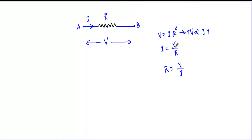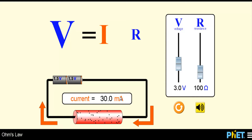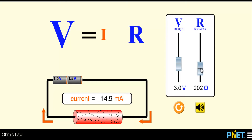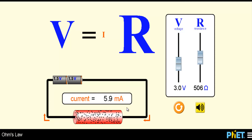Now for the second relationship: if I keep voltage V constant, current and resistance are inversely proportional — if resistance increases, current decreases. For example, keeping voltage constant at 3.0 volts: at 100 ohms, current is 30 milliamperes; increasing resistance gives 20.3 milliamperes; at 202 ohms, current is only 14.9 milliamperes; and at 506 ohms, current drops to just 5.9 milliamperes. As resistance increases, current decreases.